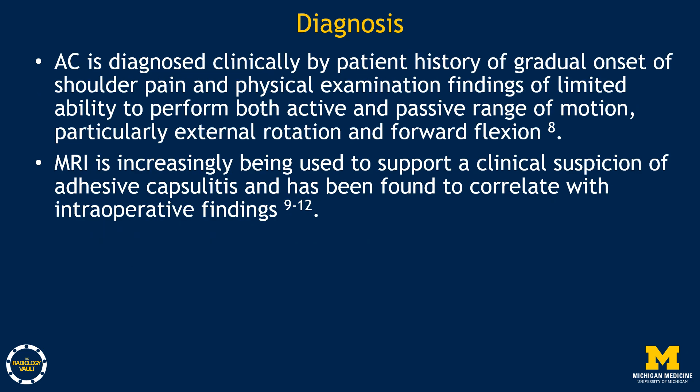Adhesive capsulitis is diagnosed clinically by patient history of gradual onset of shoulder pain and physical examination findings of limited ability to perform both active and passive range of motion, particularly with external rotation and forward flexion. However, MRI is increasingly being utilized to support a clinical suspicion of adhesive capsulitis, and has been found to correlate with intraoperative findings. In the subsequent slides, we will show a few different imaging features of adhesive capsulitis on MRI, followed by some example cases.